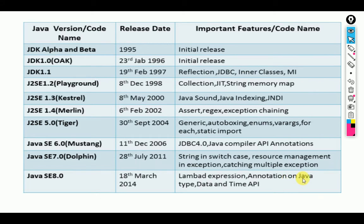SE 8.0 introduced lambda expressions, annotations, annotations on Java types, Date and Time API, Streams, switch case improvements, resource management, multiple exception catching, and more. JDK 6 and JDK 4.0 introduced JDBC 4.0. I will explain about JDBC 4.0 in Advanced Java. Annotations are very powerful and I will cover the annotation API in Advanced Java as well.